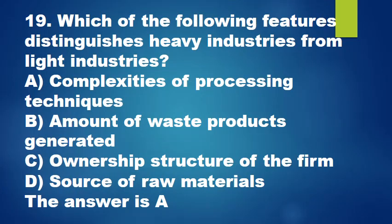Question 19: Which of the following features distinguishes heavy industries from light industries? A. Complexities of processing techniques, B. Amount of waste products generated, C. Ownership structure of the firm, D. Source of raw materials. The answer is A.